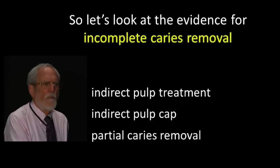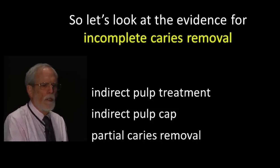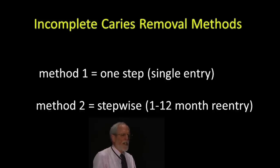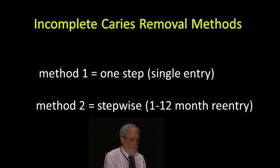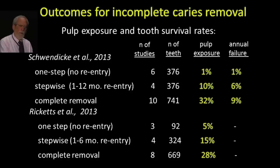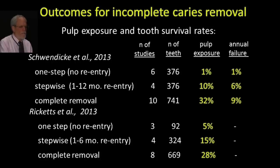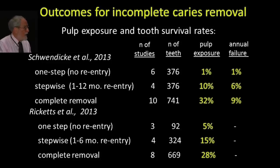A systematic review published last year included studies testing either the one-step or stepwise method against complete caries removal. For the one-step method, six studies with 376 teeth showed a 1% pulp exposure rate and a 1% annual failure rate over one to two years. For the stepwise method, four studies also with 376 teeth showed a 10% pulp exposure rate and a 6% annual failure rate — and the majority of those exposures occurred at re-entry, not at the original entry.